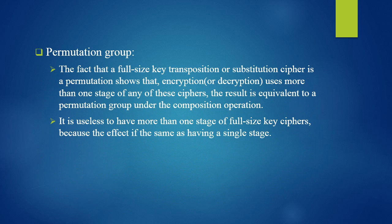Now, what do we know about permutation groups? It is useless to have more than one stage of permutation on an input, because the combined effect can always be achieved by applying a single permutation. The fact that a full-size key transposition or substitution cipher is a permutation group means that using more than one stage of these ciphers results in an effect equivalent to a single permutation under the composition operation. Hence, multiple stages of a full-size key cipher are redundant.